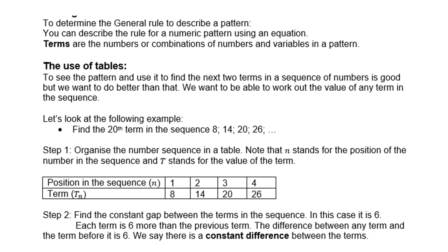Find the 20th term in the sequence: 8, 14, 20, 26. Step 1: organize the number sequence in a table. Note that n stands for the position of the number in the sequence, and t stands for the value of the term. So term 1 is 8, term 2 is 14, term 3 is 20, term 4 is 26. Step 2: find the constant gap between terms — in this case it is 6. Each term is 6 more than the previous one; there is a constant difference of 6 between terms.